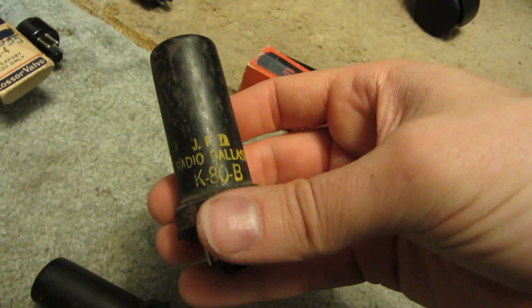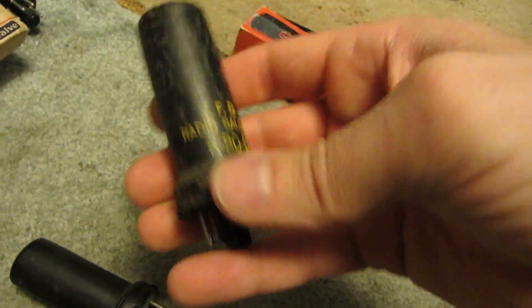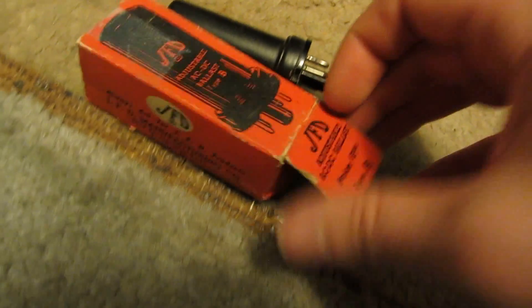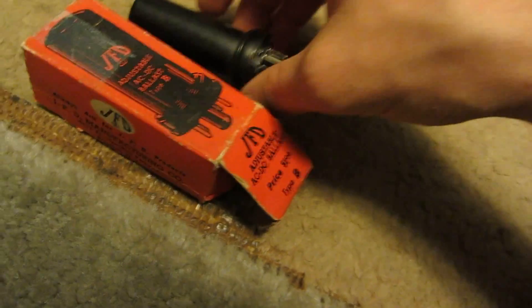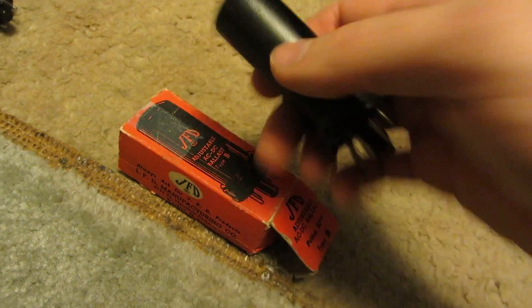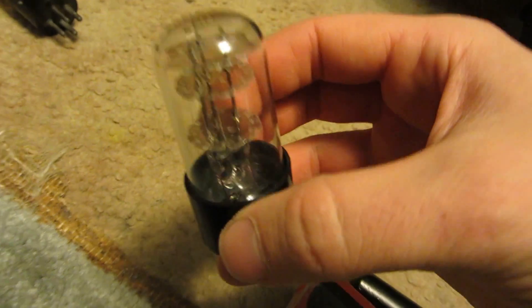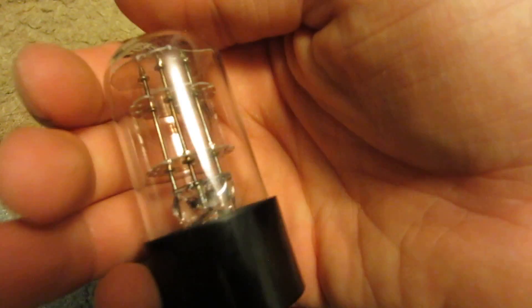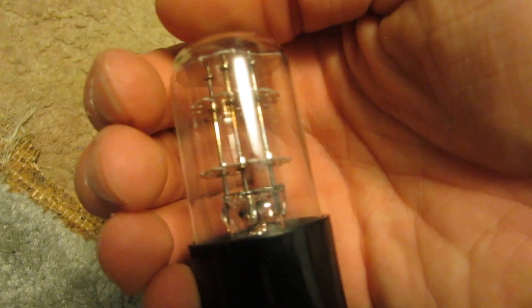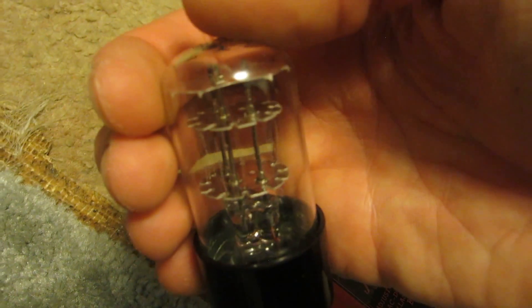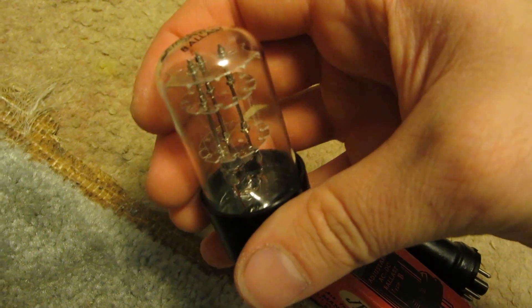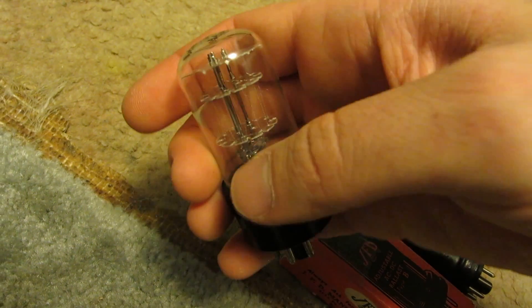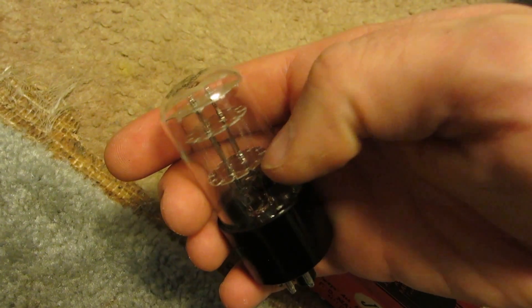And here we got a ballast, a K80-B, a JFD adjustable AC DC ballast type B. And here we got some more ballast, a 3A10. I don't know if you can see the filaments in that or not, they're very tiny.